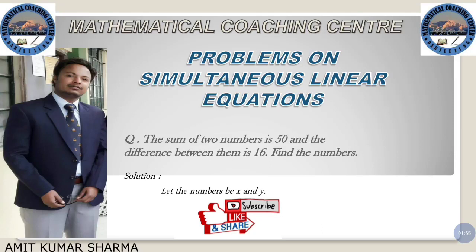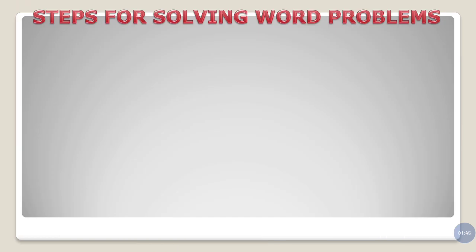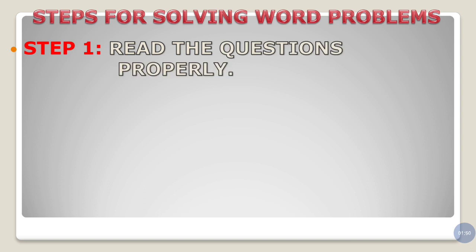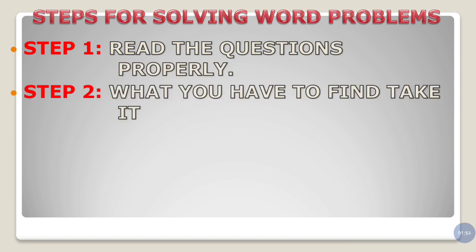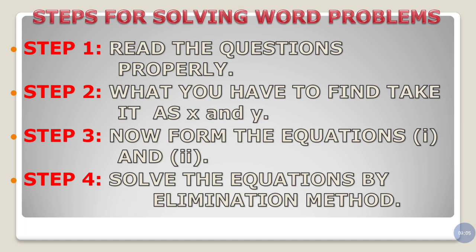Hi, I am Amit Sharma. Welcome you all to my channel Mathematical Coaching Center. In today's class we will start a new chapter: Problems on Simultaneous Linear Equation. This chapter mainly deals with word problems. To solve word problems we have some steps. Step 1: Read the question very nicely and properly. Step 2: Whatever you have to find, take it as x and y. Step 3: Using variables x and y, form simultaneous linear equations 1 and 2. Now solve by Elimination Method, since it is the easiest method among all. Now let's start today's class.